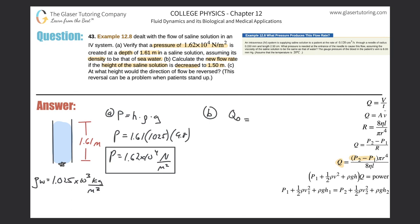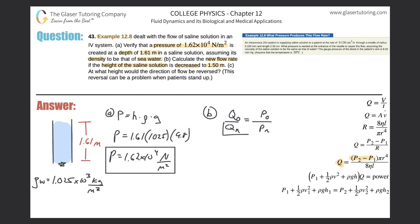I'm going to write: Q original is equal to the pressure original. And the ratio can be created by saying Q new is equal to the new pressure. We need to calculate the new flow rate, Q sub n. To algebraically manipulate this: take Q sub n, move it out of the denominator on the left and up into the numerator on the right. Take P sub n, move it up into the numerator on the left. Take P sub o, move it down into the denominator on the left. Here is our equation.